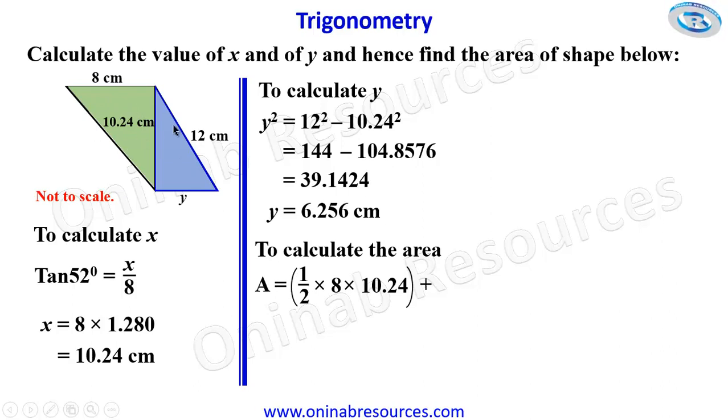Then plus the area of the small triangle. Our base here is y, and we've calculated y to be 6.256. So we're going to have half times 6.256 multiplied by the common height, which is 10.24, taking care of the area of the smaller triangle.